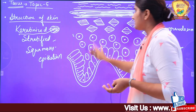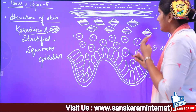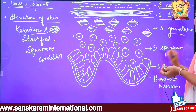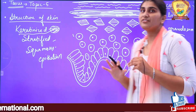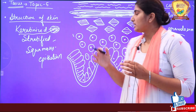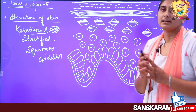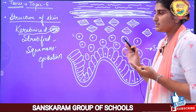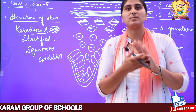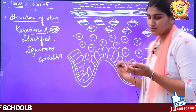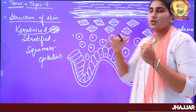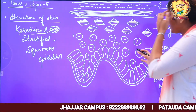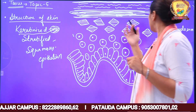If we look at the structure of skin, there are basically many layers of cells — 1, 2, 3, 4, and 5 — five different kinds of layers, each with different types of cells arranged in them. These 5 different layers are present only at 2 places: palms (hatheli) and soles of feet. Otherwise, in all other parts of the body, you will see only 4 different types of layers.